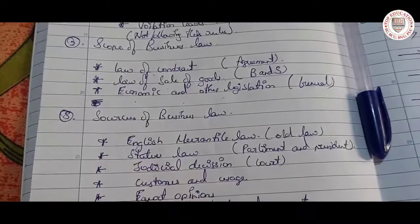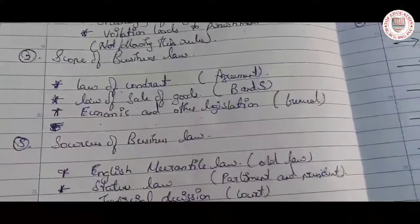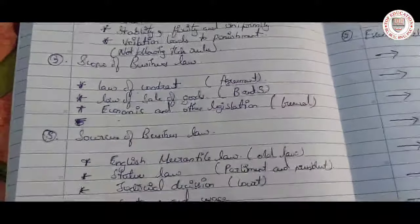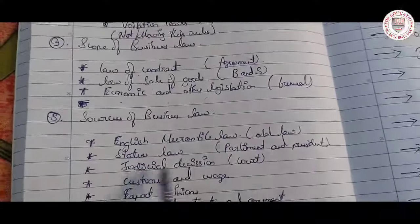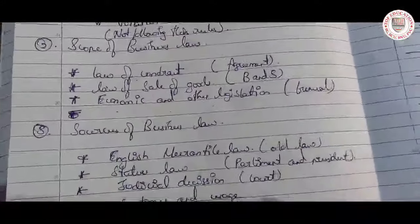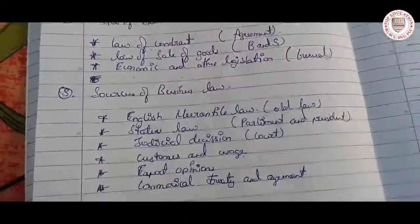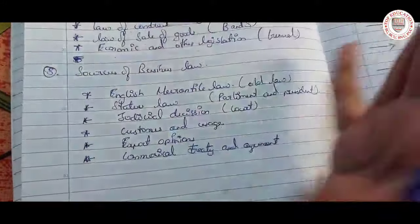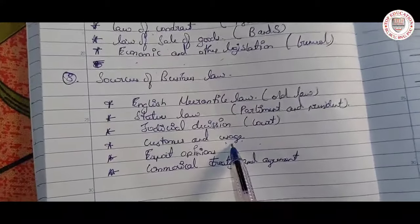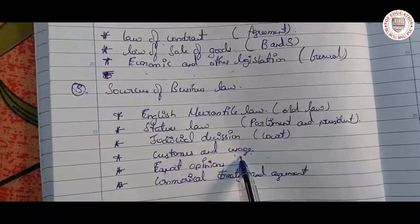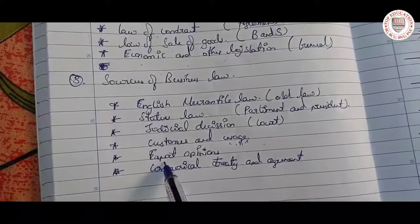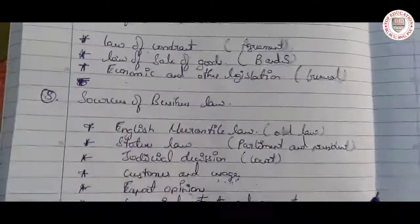Judicial decisions — these are decisions which are taken in the court. If the customer is not satisfied, he will file a case. Next, customs and usage — if the producer or manufacturer is not following the conditions expected by the customer, he will face consequences. Usage should also be taken into consideration.